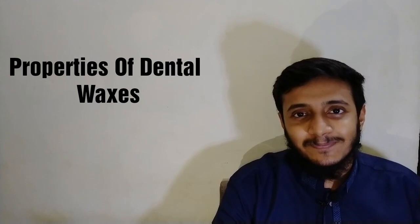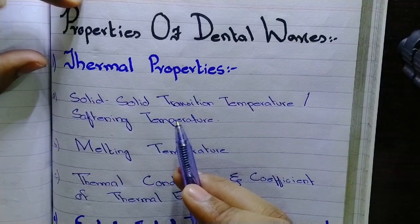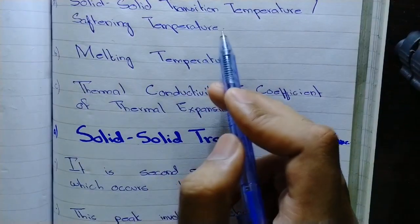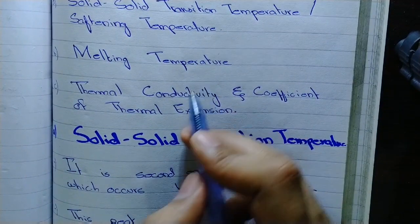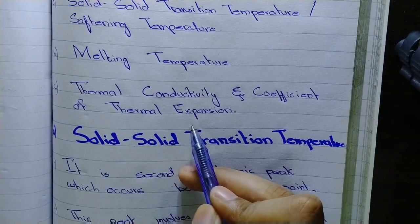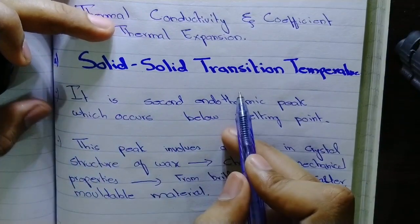Starting from the thermal properties, the thermal properties comprise of solid-solid transition temperature or softening temperature, the melting temperature, and the thermal conductivity and coefficient of thermal expansion. Now what is solid-solid transition temperature and what changes occur during this process?